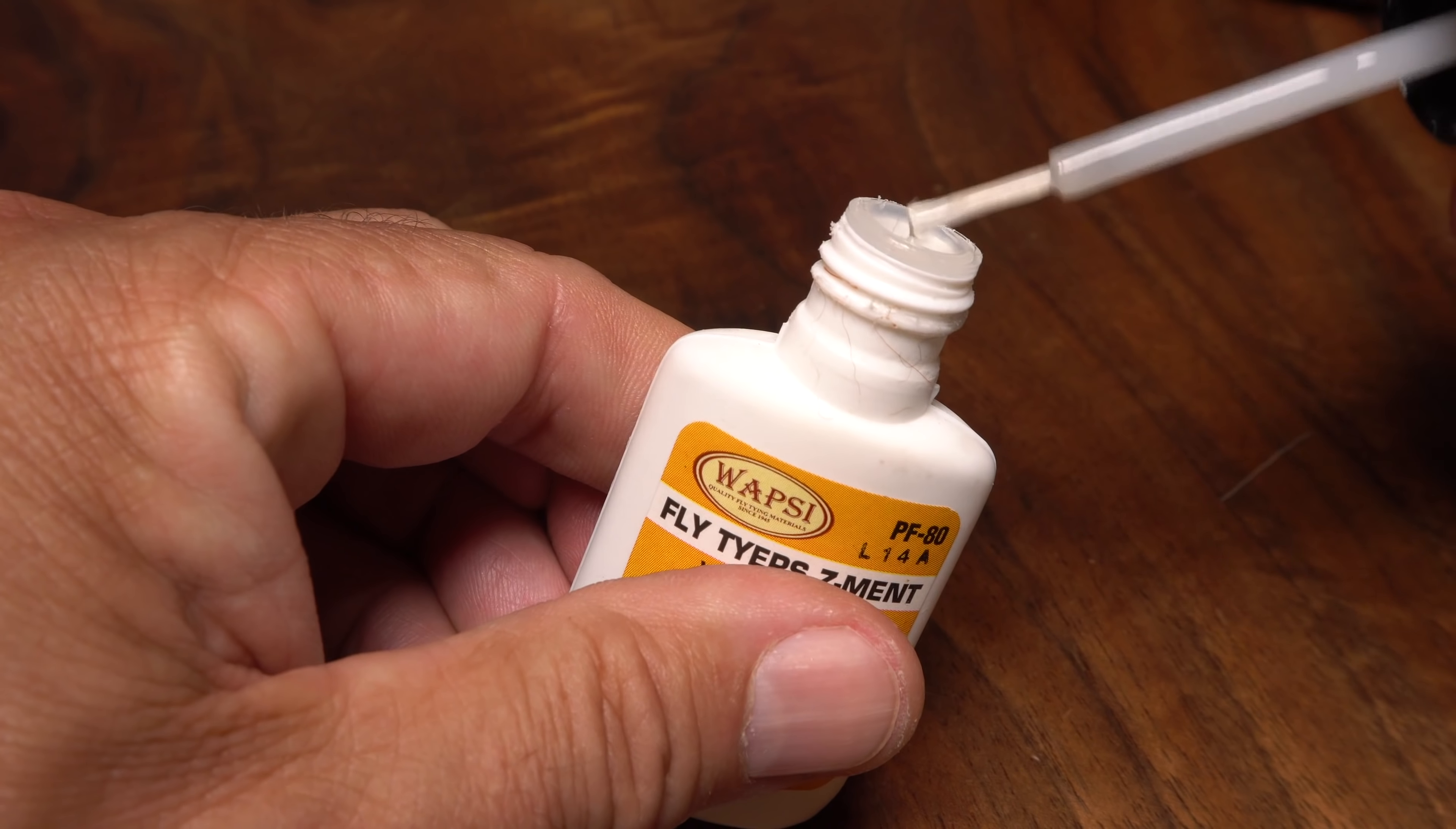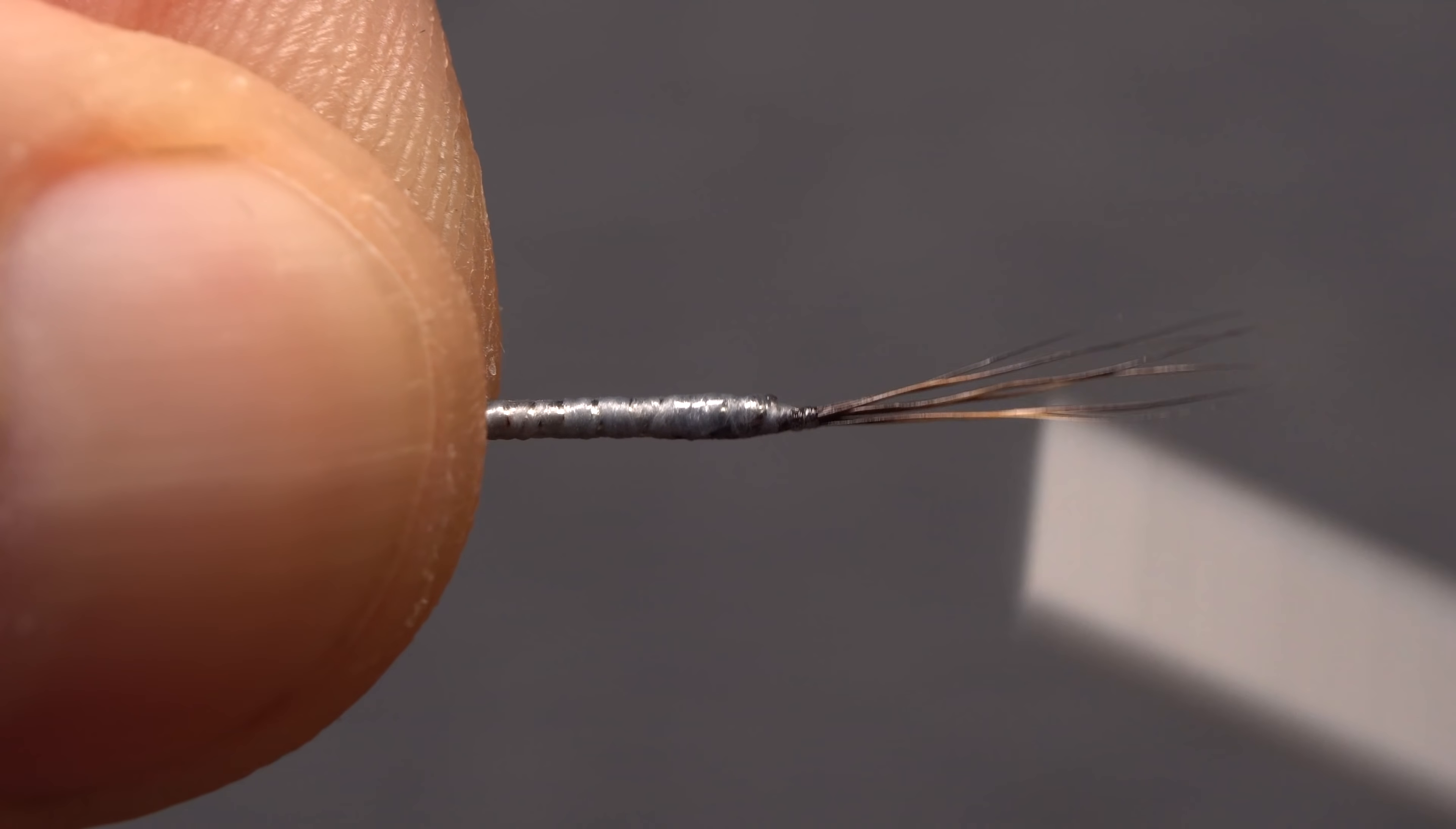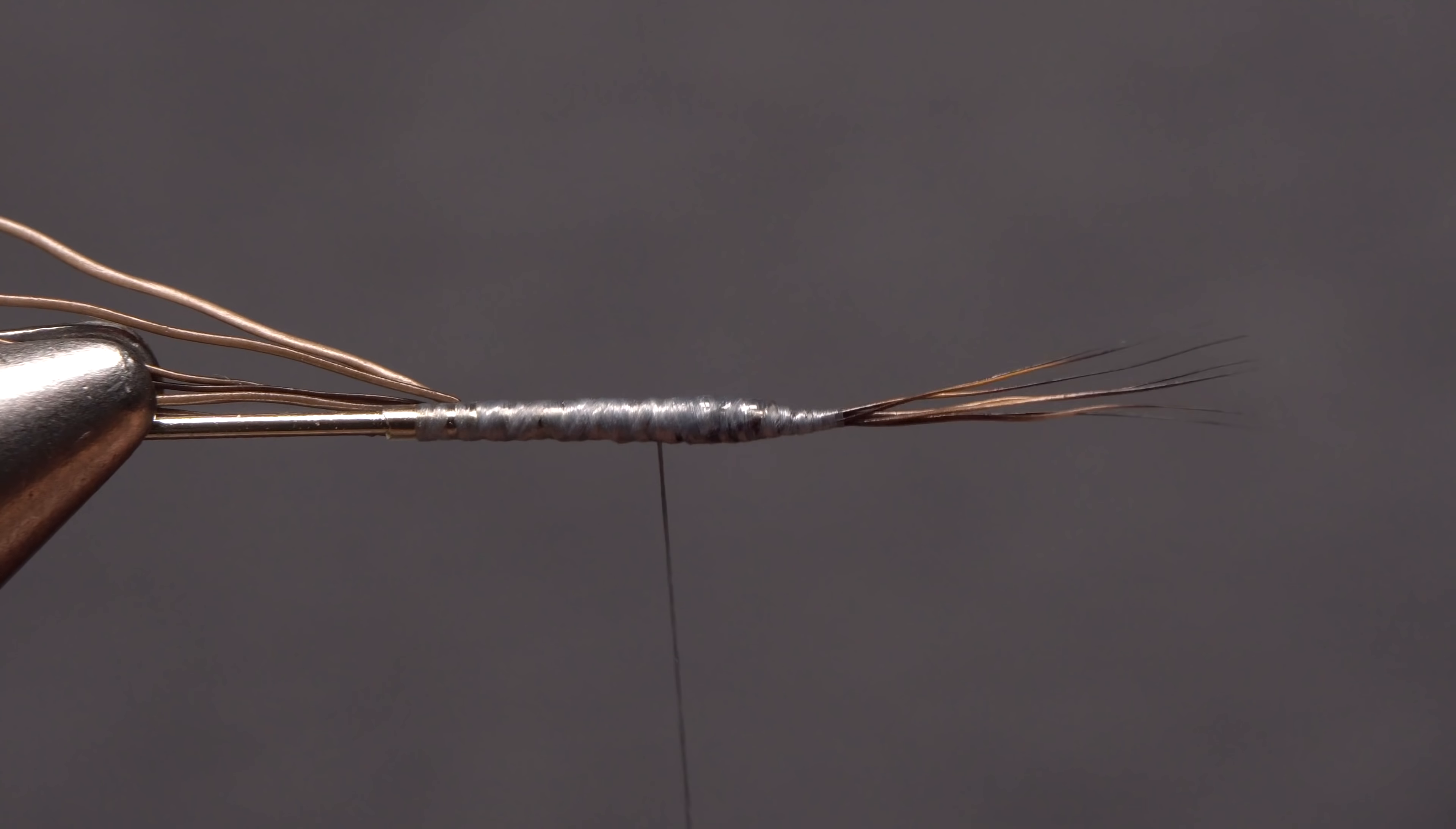A drop of super glue, here Fly Tyer's Z-Ment, placed on the thread wraps at the very base of the tail is almost essential in terms of durability. Take thread wraps over top of the adhesive to help set it. You don't want to use too many thread wraps here, but you do want everything to be locked down well.